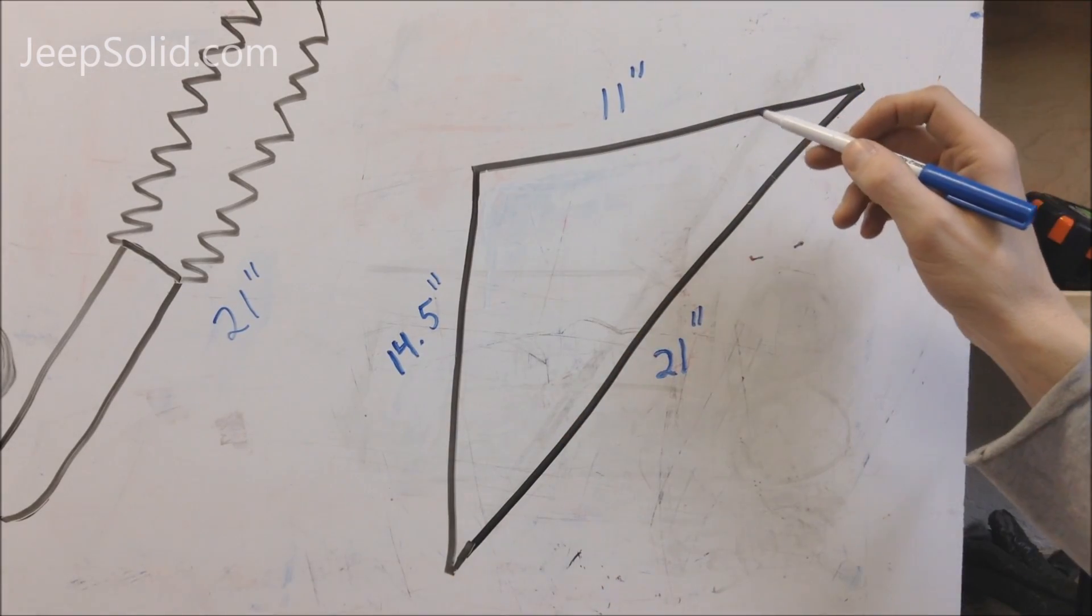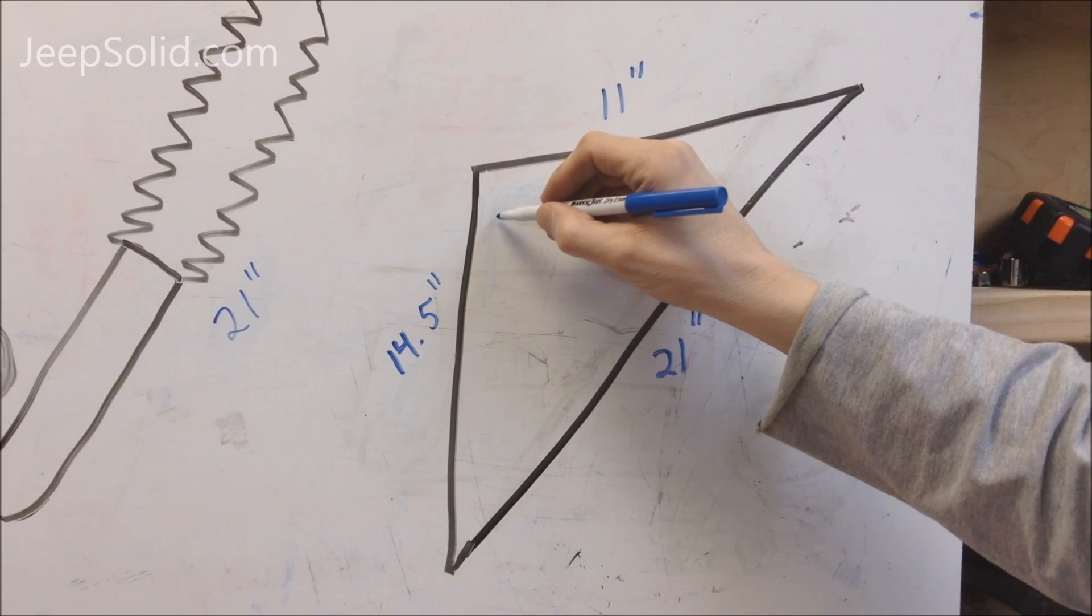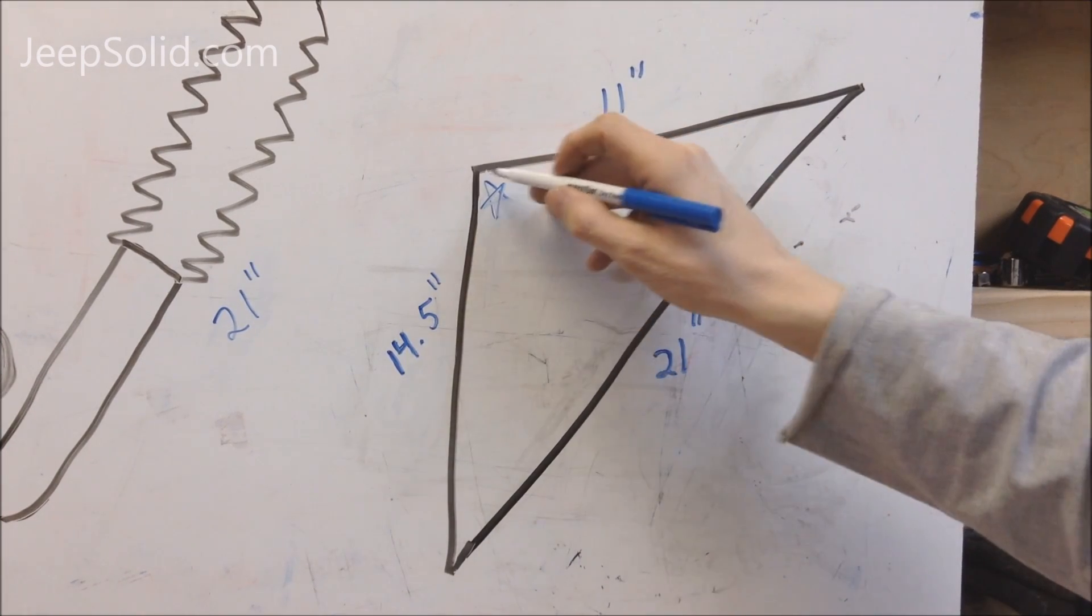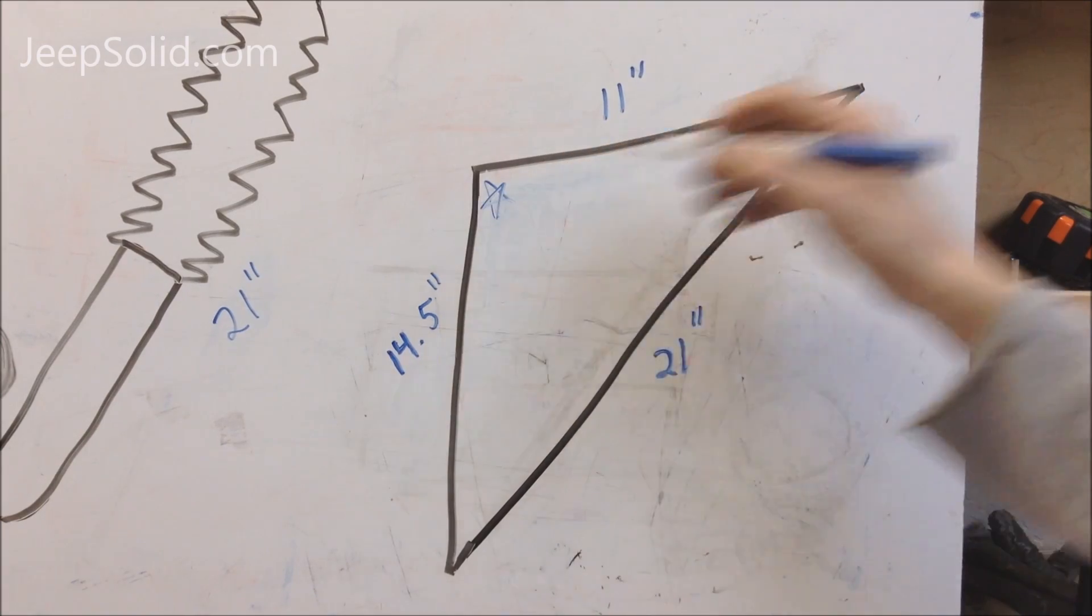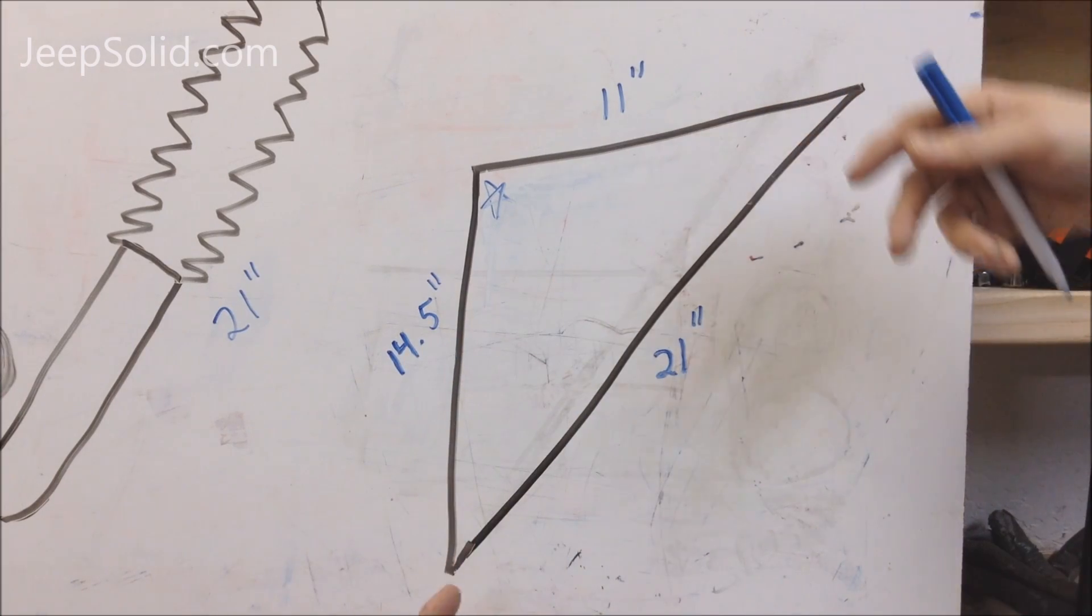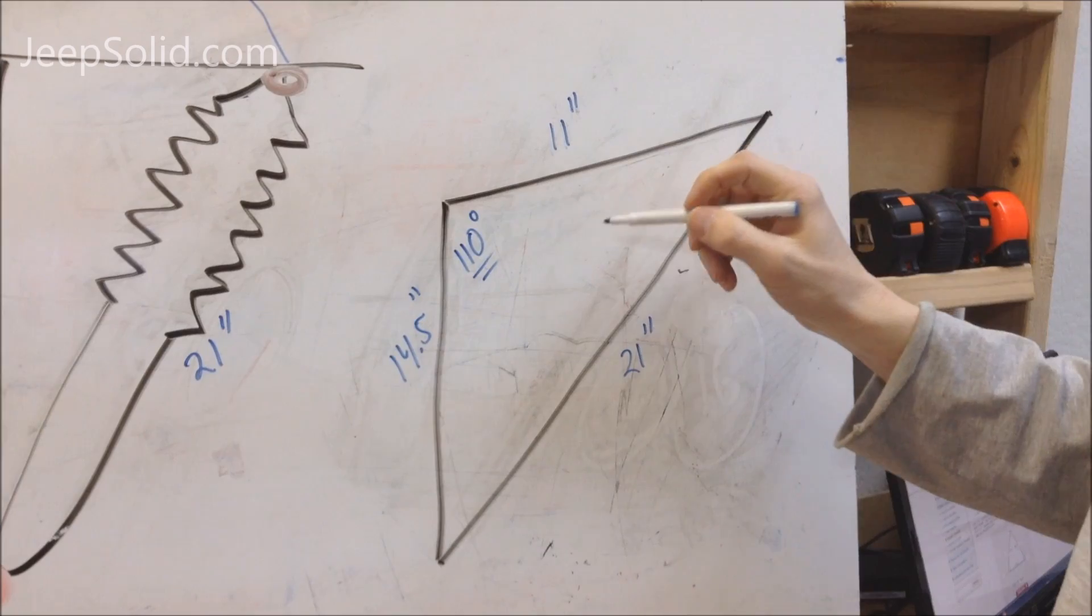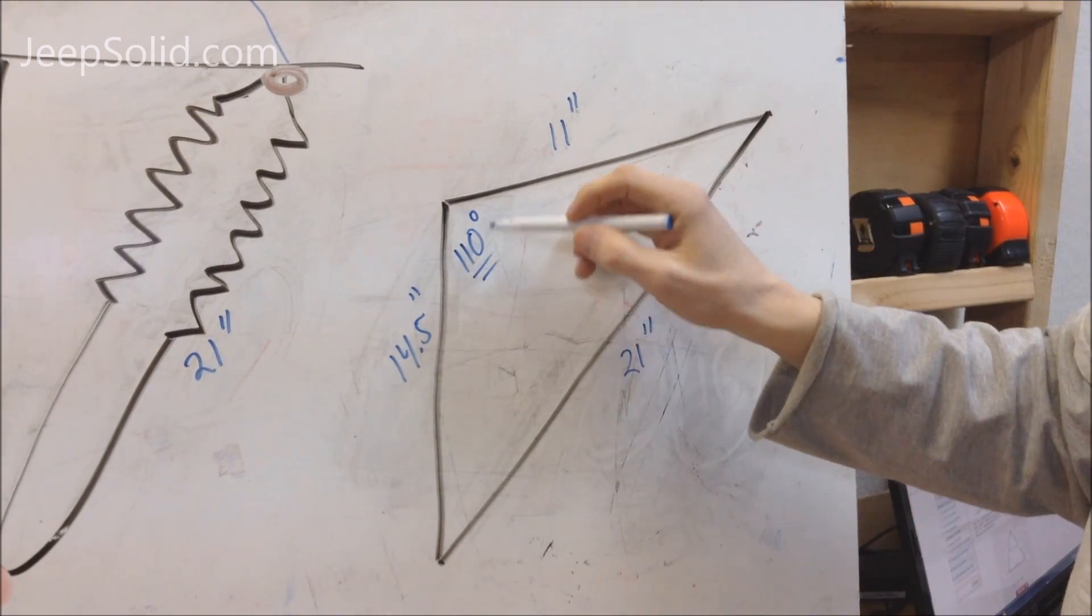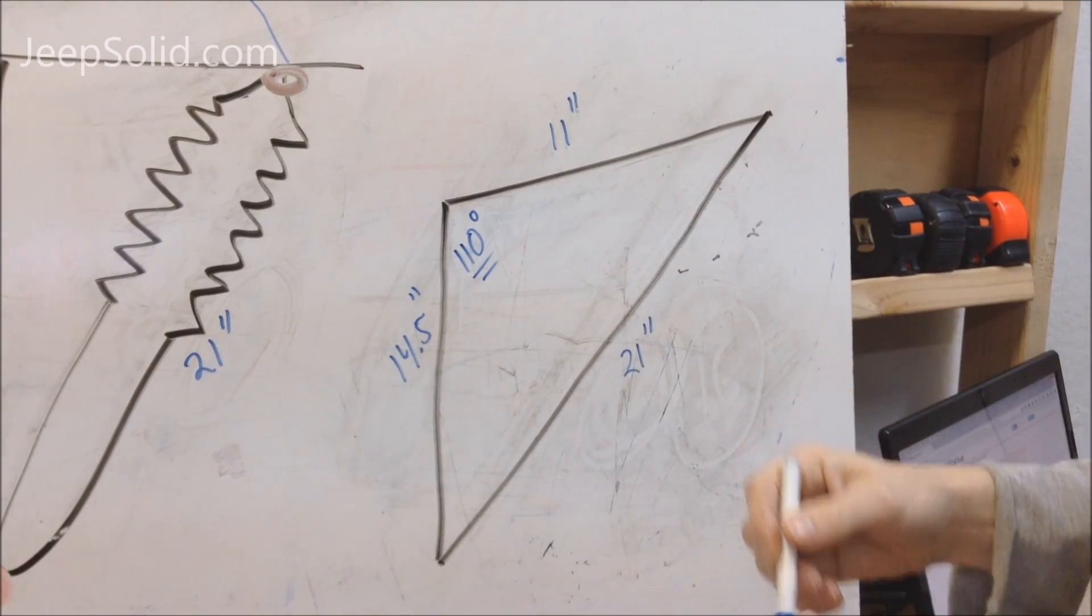Okay, now that we have the lengths of all three sides of our triangle, the key is actually going to be to figure out what this angle is. Because this angle right there is not going to change. This angle is going to change as the shock compresses, as is this angle. So now that we've put these three figures into the Google calculator and figured out this angle is 110 degrees,